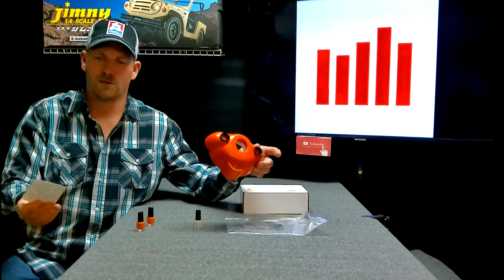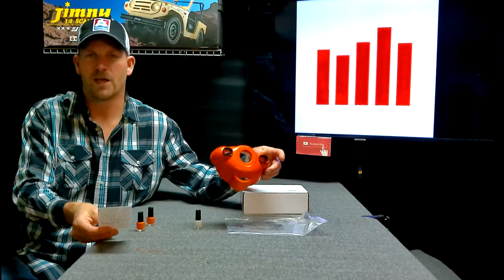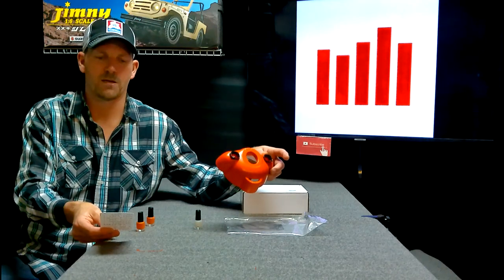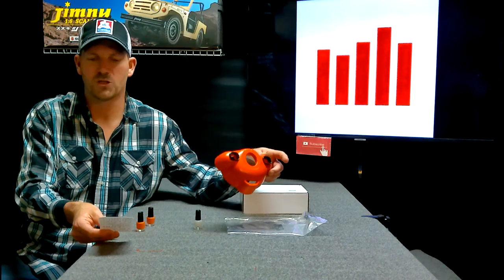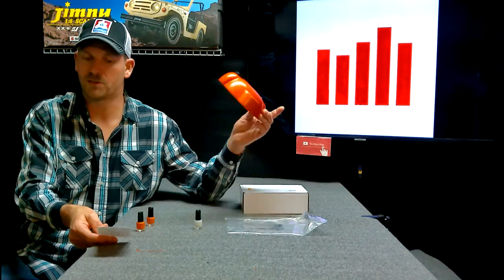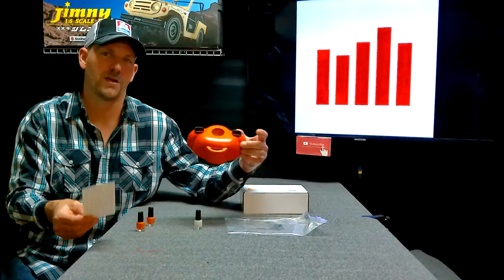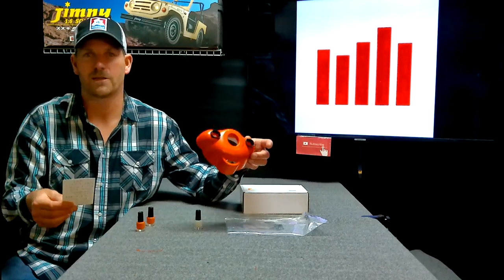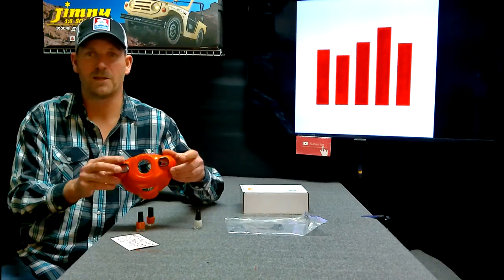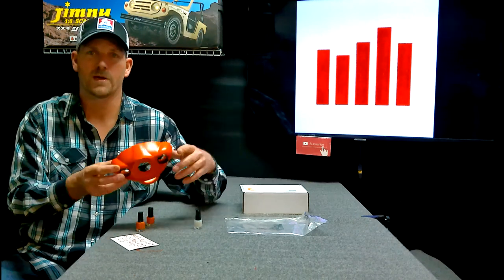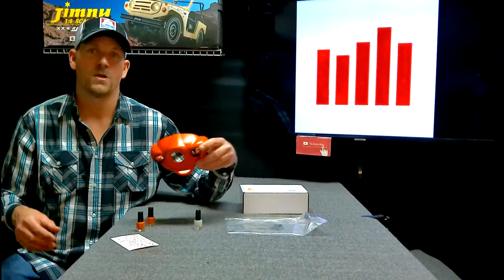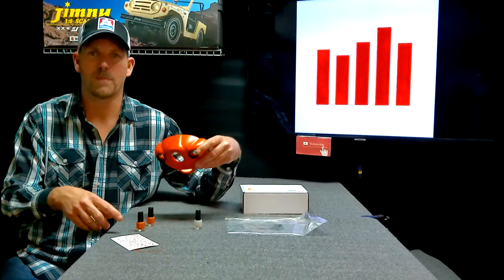So far we've got the UMX Pitts, the FMS Pitts, the E-Flight Air Tractor, the Extra 300, the E-Flight Commander, the E-Flight Valiant, the E-Flight T-28 1.1, the F4U Corsair, the Carbon Z Cub. There might be another plane that has this same color orange, maybe the Carbon Z Cessna or who knows. Maybe you have a plane that is not in my list but your plane is a red.